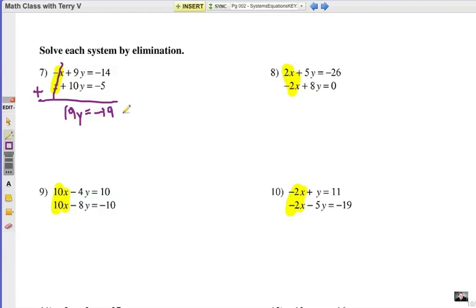That gives me 19y equals negative 19. As you know, if we divide each side by positive 19, y would be a negative 1. So that is my first answer.